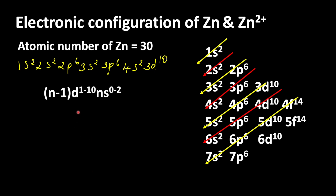This is the general electronic configuration of d-block elements: (n−1)d¹⁻¹⁰ ns⁰⁻². It means we first write the inner d orbitals and then the outer s orbital, so there is a need to change the electronic configuration of zinc.